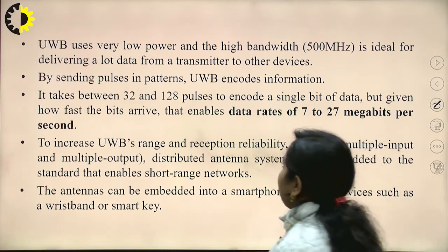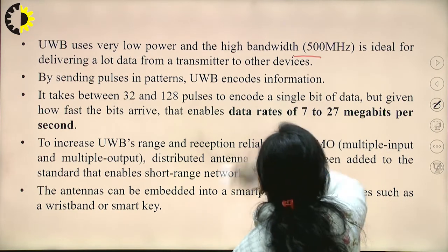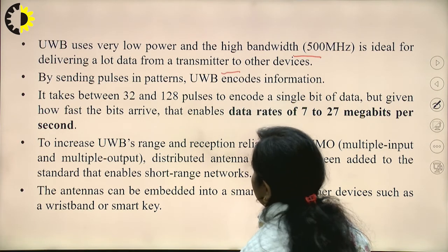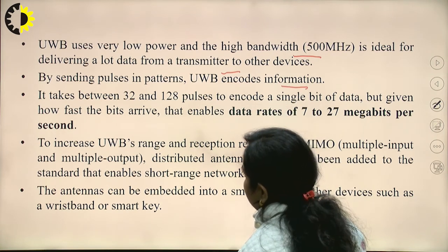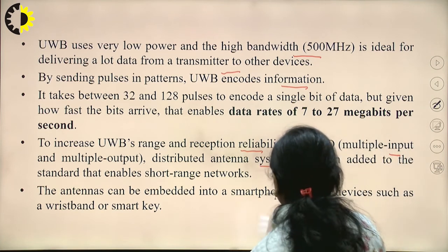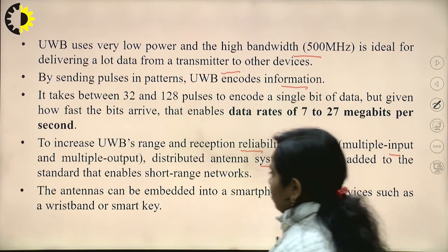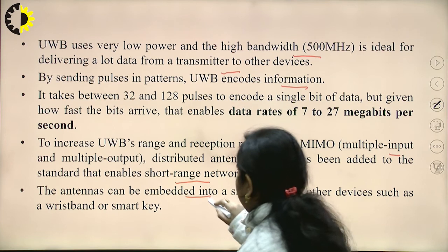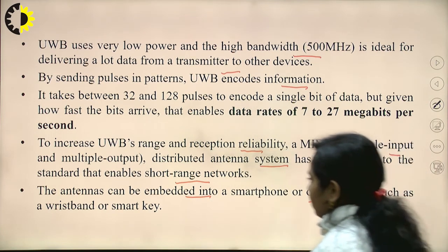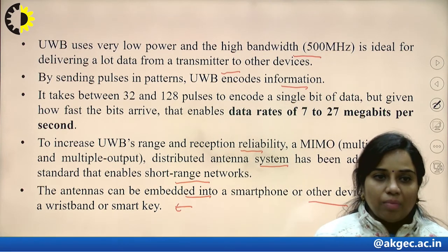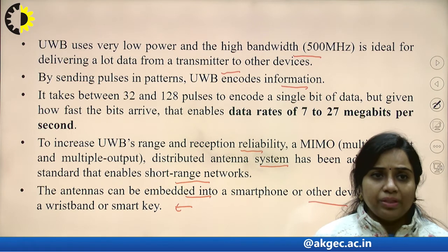UWB uses very low power and high bandwidth, making it ideal for delivering large amounts of data from transmitter to receiver by sending pulses in patterns — this is how UWB encodes information. To increase UWB range and reception reliability, a MIMO distributed antenna system has been added to the standard, enabling short-range networks. The antennas can be embedded into a smartphone or other devices such as a wristband or smart key.